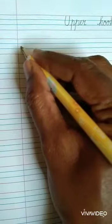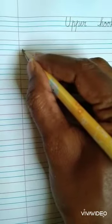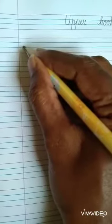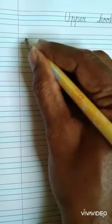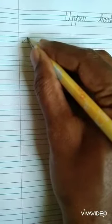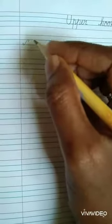It starts from the middle of the blue line, come down, go up, touch the first line and one down curve. Upper Hook.